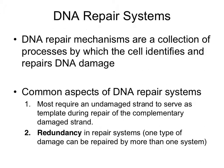DNA repair systems are an essential aspect of cellular life because there are many mutagenic agents that exist naturally and also in greater abundance due to human activities. DNA repair mechanisms are a collection of processes by which cells identify and repair DNA damage. Two common principles: most systems require an undamaged strand as a template during repair of the complementary damaged strand, and there is redundancy — many repair systems exist, so most common DNA damage can be repaired by more than one system.